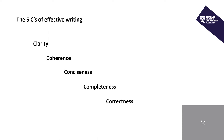The fourth of our five C's of effective writing refers to completeness, and this is linked to the previous one because this means that you need all of the relevant information to fulfill the task requirements and nothing more.